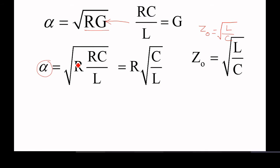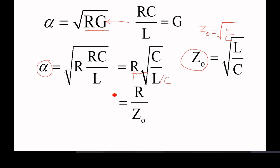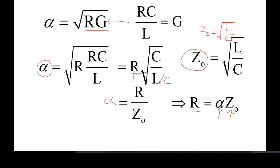In the problem statement, alpha is given and characteristic impedance value is also given. From these two we can calculate the value of R. This can be written as R by Z₀, because Z₀ is nothing but root L by C. So alpha is equal to R by Z₀, and therefore R is equal to alpha into Z₀. Alpha is given and Z₀ value is given, so we can find the value of the resistance.